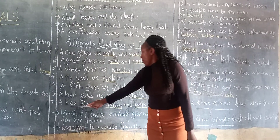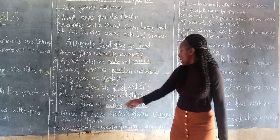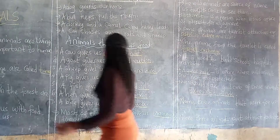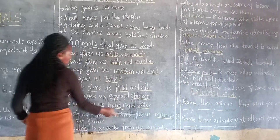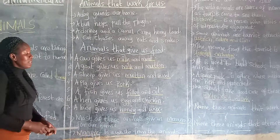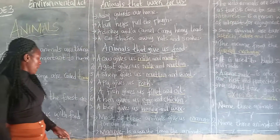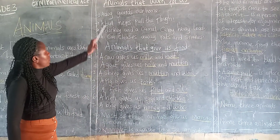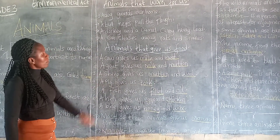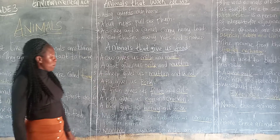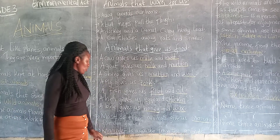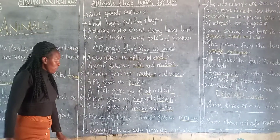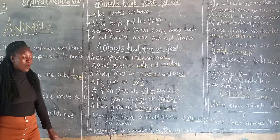Then a bee gives us honey and wax. So most of these animals give us manure for our farms. So the animals that I mentioned here, most of them they provide us with manure.